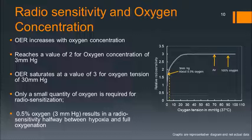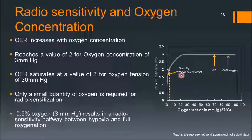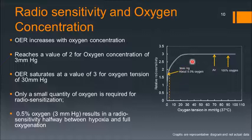The oxygen enhancement ratio is a measure of radiosensitivity in the presence of oxygen. The OER increases with oxygen concentration. It reaches a value of 2 for an oxygen concentration of 3 mmHg pressure, that is about 0.5% oxygen, and saturates to a value of 3 at about 30 mmHg oxygen tension. This means only a small quantity of oxygen — just 0.5% — is required for radiosensitization.